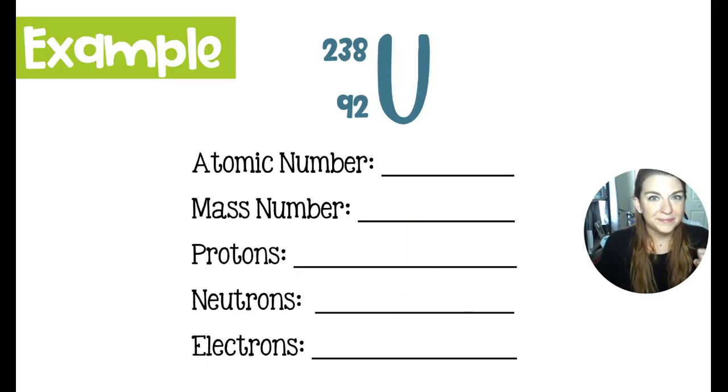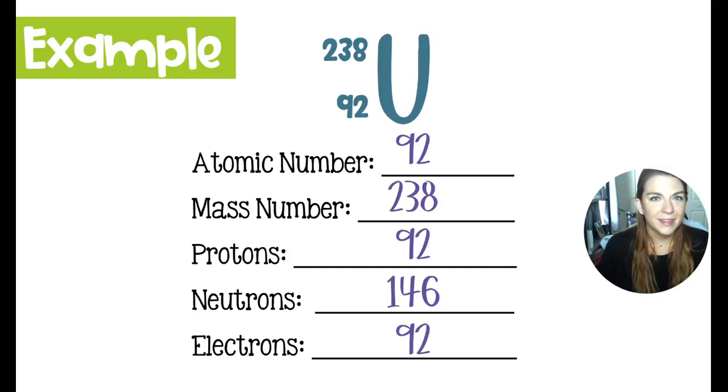One more example. See if you can do this for element U, which is uranium. All right, the atomic number here is 92, indicated on the bottom. That's our atomic number. That is also the number of protons and the number of electrons because we're talking about an atom.